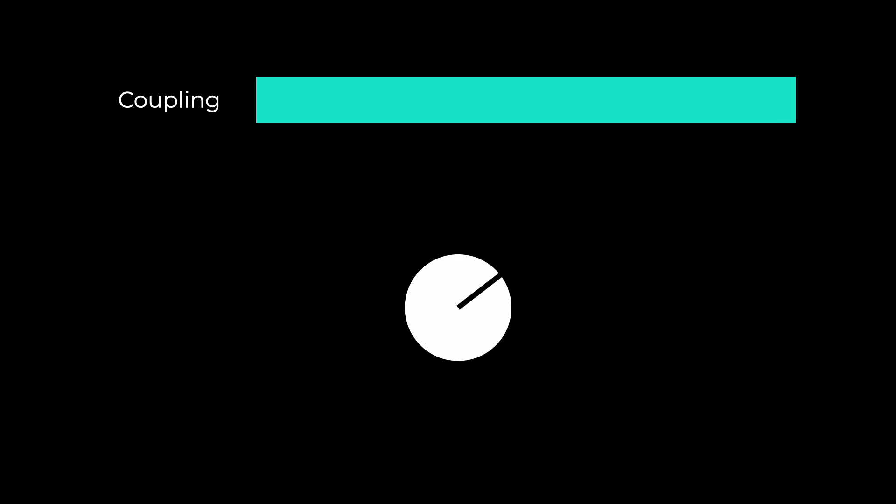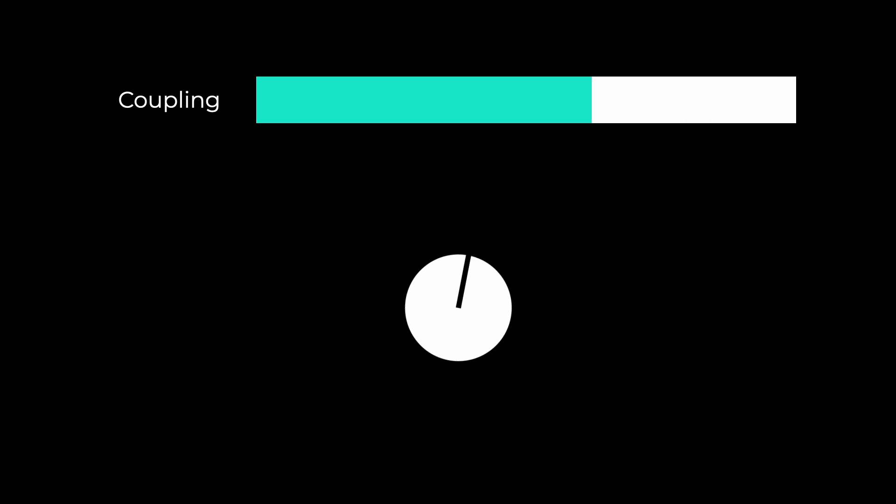One important thing to know is that we always have coupling. We strive to reduce the level of coupling, but we can't avoid it. That's why we refer to it as loosely coupled versus tightly coupled, or low coupling versus high coupling — any of those terms mean the same thing. Think of it like turning a knob: you want to move it toward the low end, because when you have high coupling you're in a big ball of mud, and you want to avoid that.